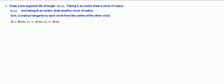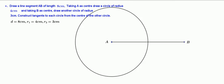Draw a line segment of length 8 cm, that is AB. Draw first circle with radius equal to 4 cm. Draw second circle with radius equal to 3 cm at point B, that is point B is center of the circle.